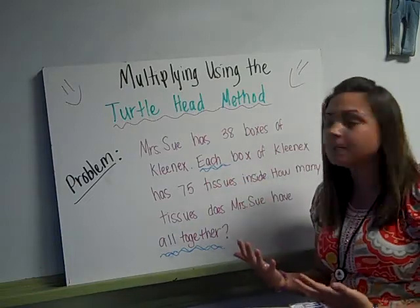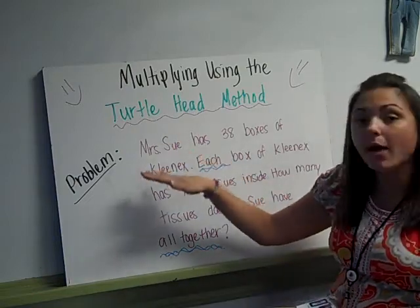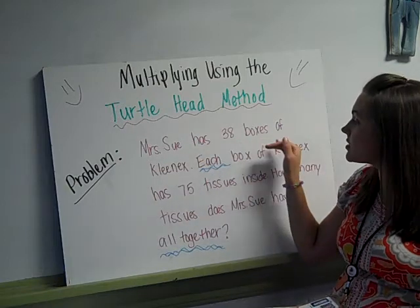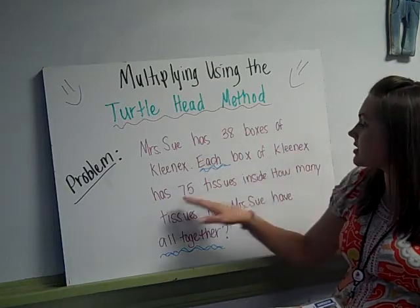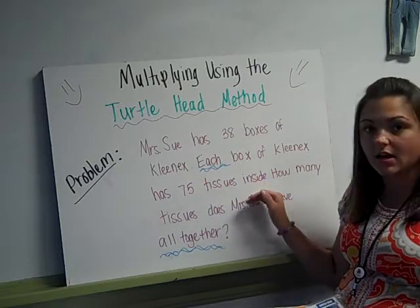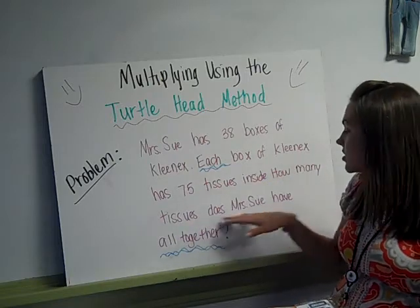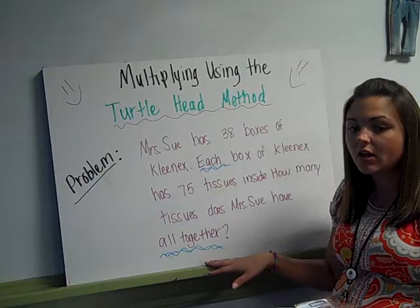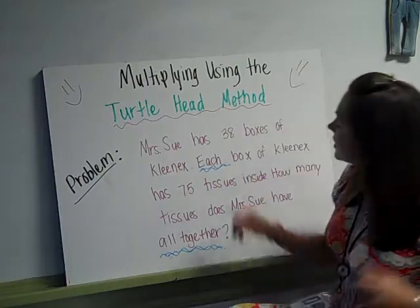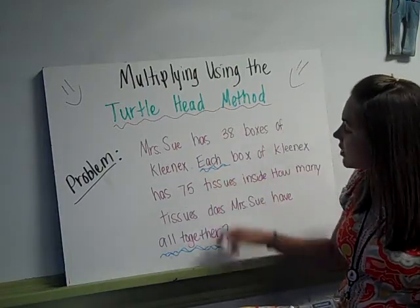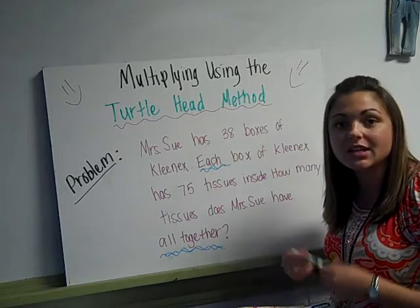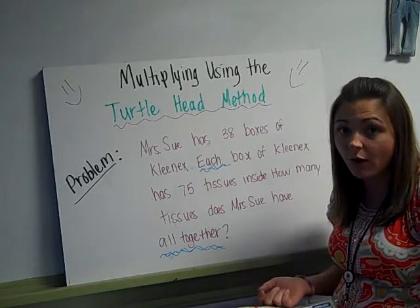So I have a problem here, and the problem is Miss Sue has 38 boxes of Kleenex. Each box of Kleenex has 75 tissues inside. How many tissues does Miss Sue have all together? Now what I did was I went ahead and I underlined these words right here, each, all together. They helped me understand that I'm supposed to do multiplication to solve this problem.